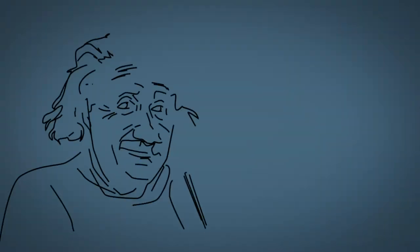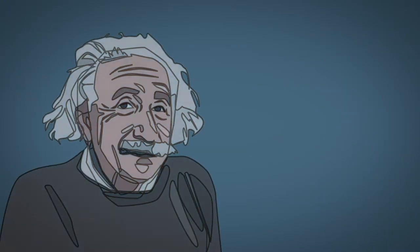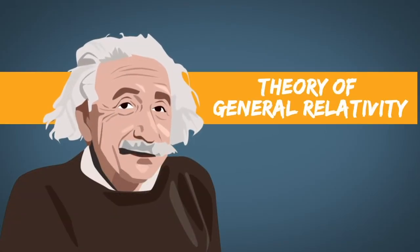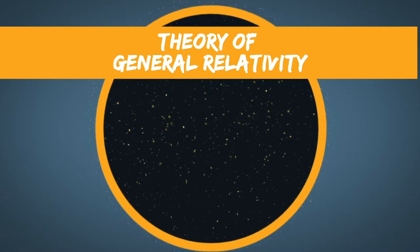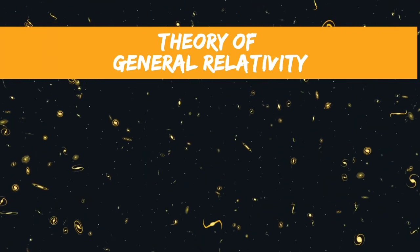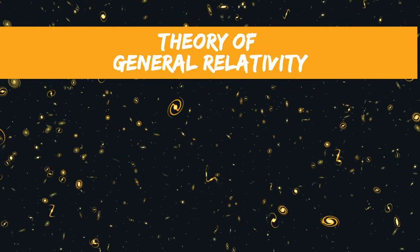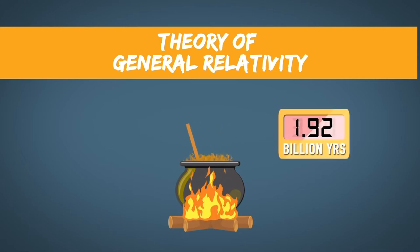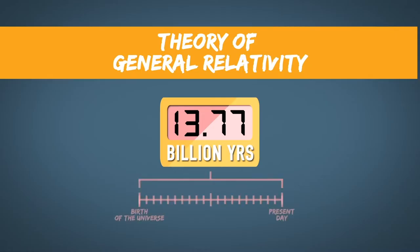So we understand the history of the universe through Einstein's theory of general relativity. General relativity tells us how the universe has grown and how quickly it's grown. In general relativity, once you plug in all the ingredients for what the universe has to offer, you can calculate an age of the universe. And this is how we arrive at our current estimate of the age, which is 13.77 billion years.